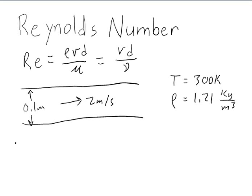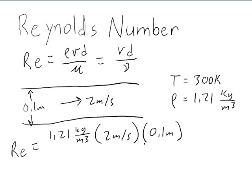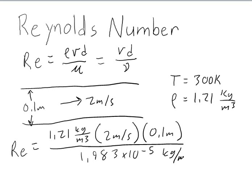We can calculate the Reynolds number. The Reynolds number equals 1.21 kilograms per meter cubed times 2 meters per second times 0.1 meter diameter of our tube, divided by the viscosity for air at 300 Kelvin, which is 1.983 times 10 to the negative 5th kilograms per meter second.